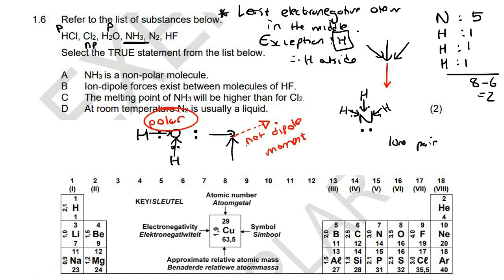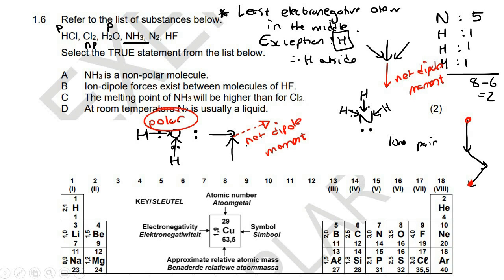If you struggle to work out the net dipole moment, for those of you that love head-to-tail diagrams, you could draw one of the arrows, then draw the next one, and work out the overall effect by going from the beginning to the end. But the key idea is: is there a net dipole moment? Yes, there is — it doesn't cancel out. And so NH3 is a polar molecule.